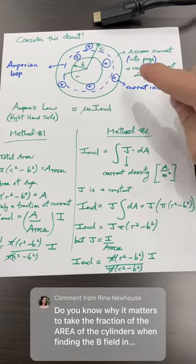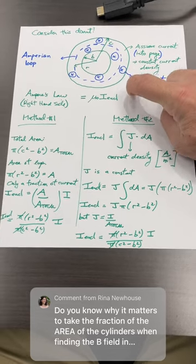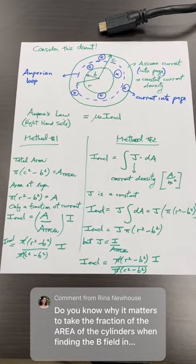So what I have here is just the donut shape and I drew an Amperian loop here, and I'm interested in calculating how much current is enclosed by that Amperian loop.